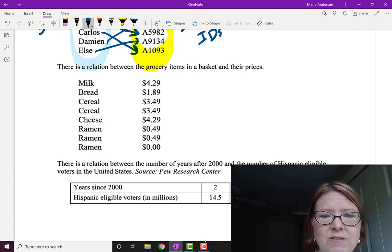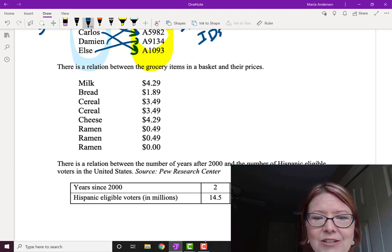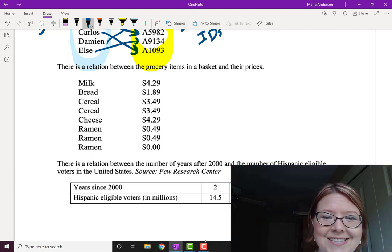And then we have three packages of ramen. They were on sale. You could either buy them for $0.49 each, or three for $0.98. And so when you get to the third ramen, it actually costs $0.00. And so that's a relation between the items in the grocery store and their prices.